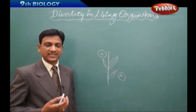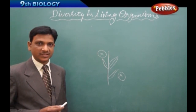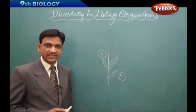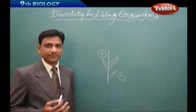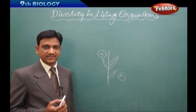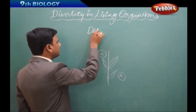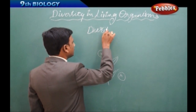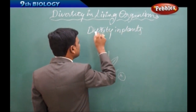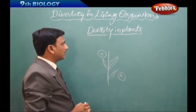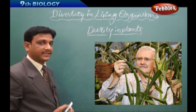Now we follow a systematized way of classifying organisms, and based on classifications we study organisms in detail. Before looking into classification, we have some activities to learn how to do grouping based on similarities or characteristics of organisms. First, we are going to talk about diversity in plants, and we will do an activity.